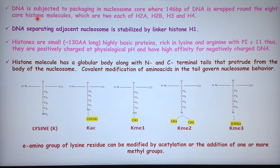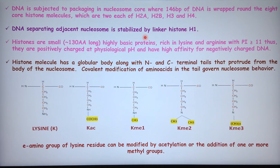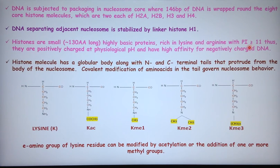DNA is packaged in the nucleosome core where 146 base pairs of DNA are wrapped around 8 core histone molecules — two each of H2A, H2B, H3, and H4. DNA separating adjacent nucleosomes is stabilized by linker histone H1. Histones are small, nearly 130 amino acids long, and are highly basic proteins rich in lysine and arginine, with a pI greater than 11. At physiological pH of around 7 to 7.5, they are strongly positively charged and show very high affinity for negatively charged DNA.